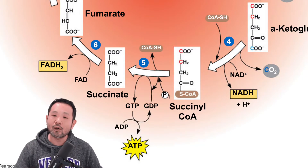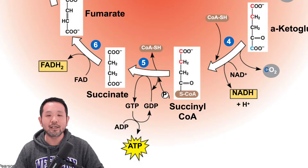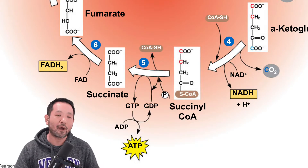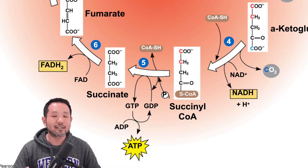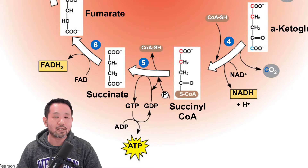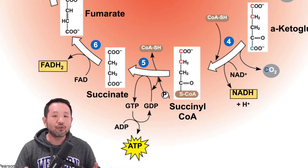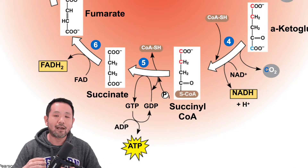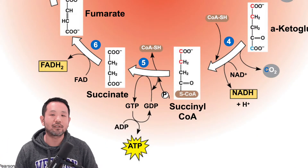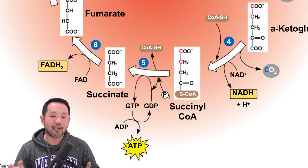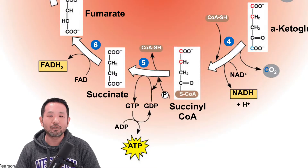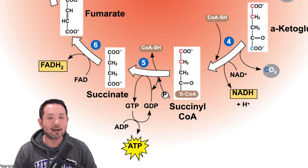At this point, coenzyme A makes a reappearance, turning this substrate into what we call succinyl-CoA. Succinyl-CoA is now four carbons long, which means that the initial two carbons we brought in from the acetyl-CoA have now fully been oxidized into CO2, allowing us to imagine that by this point, any carbon we began with in the glucose molecule would have all been converted into carbon dioxide.